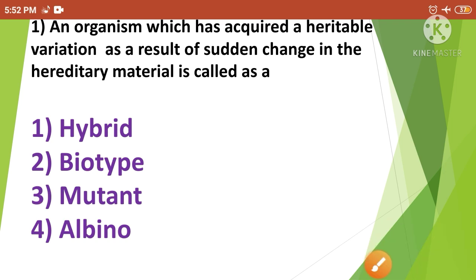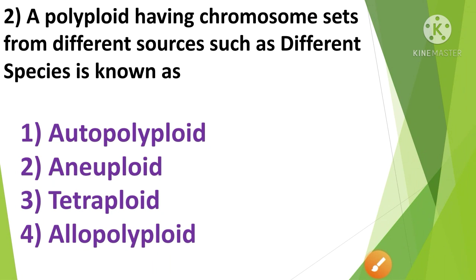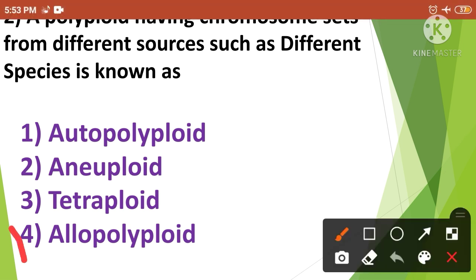Next question: A polyploid having chromosome sets from different sources such as different species is known as — 1st option autopolyploid, 2nd option aneuploid, 3rd option tetraploid, and 4th option allopolyploid. The correct answer is option 4th, allopolyploid. A polyploid having chromosome sets from different sources such as different species is known as allopolyploid.